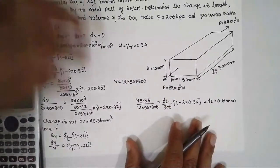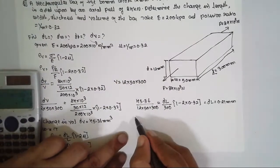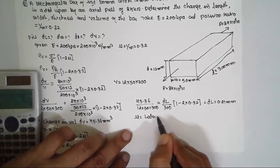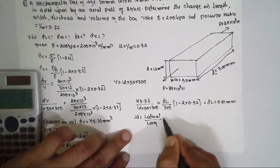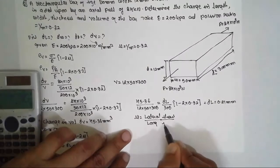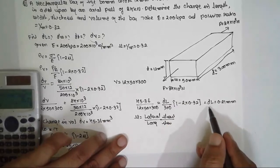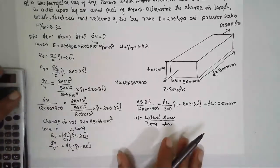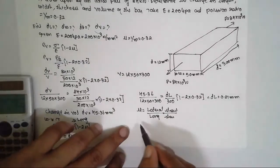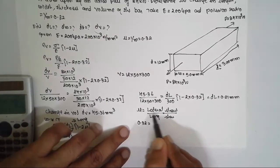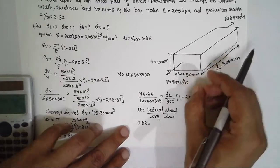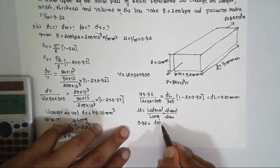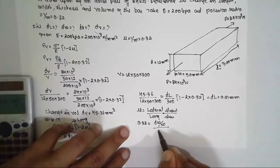Now we have to find ΔW and ΔT. These depend on Poisson's ratio. Poisson's ratio = lateral strain / longitudinal strain. Lateral strain refers to the reduction in width and thickness. For ΔW: μ = (ΔW/W) / (ΔL/L).